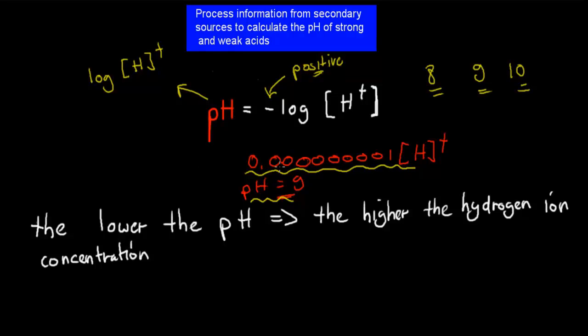What pH does is convert a tiny number into a normal rational number, such as 1, 2, 3, 4, 5, 6, 7, 8, 9, 10, 11, 12, 13, or 14.